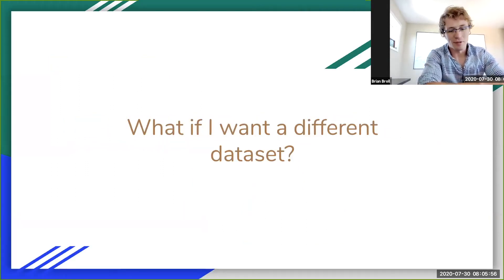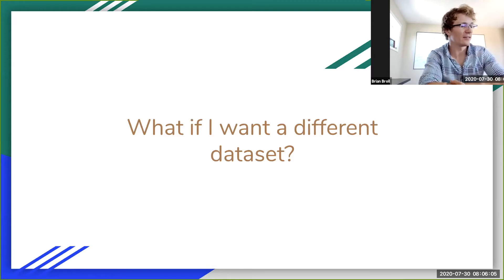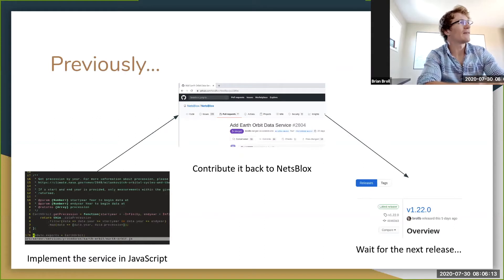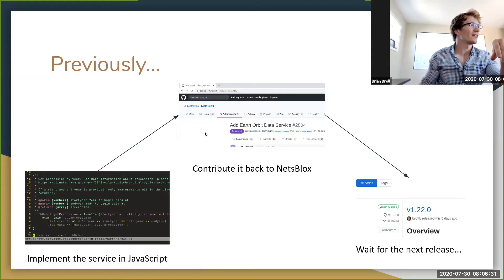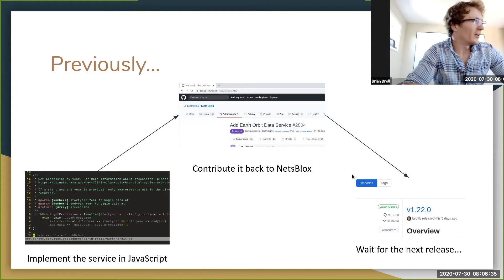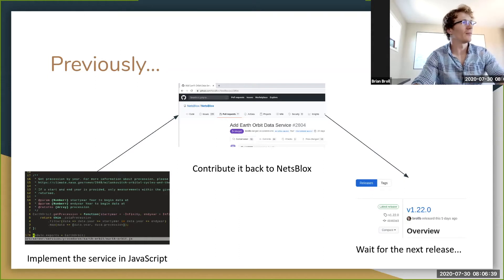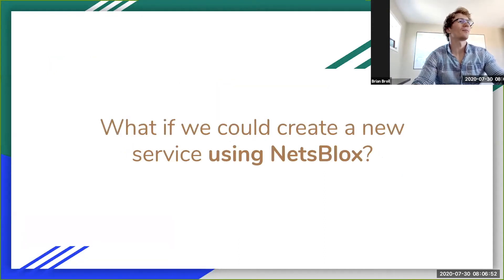People often ask about new data sets — it makes sense, because a lot of times you want to pick data sets that are relevant to your students. If you wanted a new data set previously, you would write a new service in JavaScript and contribute it back to NetsBlox on GitHub, then wait for the next release. The downside is that it takes some overhead — writing code in JavaScript rather than NetsBlox and jumping through a few hoops to get it integrated. Since NetsBlox is a block-based programming environment, why can't we use NetsBlox to create a new service?